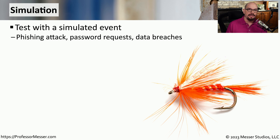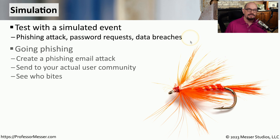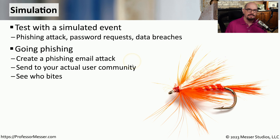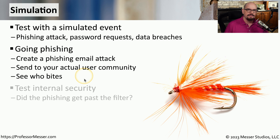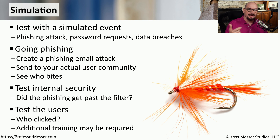We might also want to test our security with simulations — such as a phishing attack, a password reset process, or removing data from the network to see if it's identified by our automated systems. A simulation many users are accustomed to are phishing simulations. We spend a lot of time training users not to click links inside email messages, but the only way to tell if they would click a link is by performing a phishing simulation. We would create a phishing email that would be interesting to users and send it to everyone in the company, then watch our monitoring systems to see who clicks those links. The first test is whether our internal automated systems can even detect the phishing email, and if it reaches users, we can see who clicked it and assign additional training to those users.